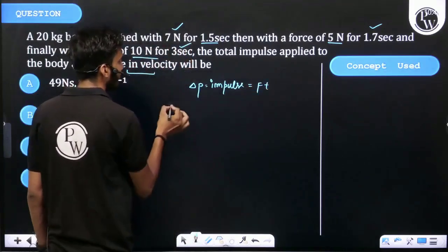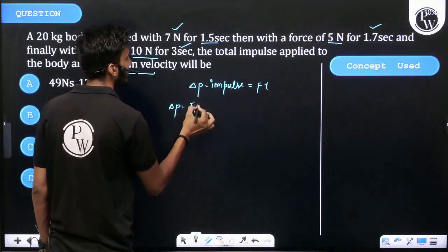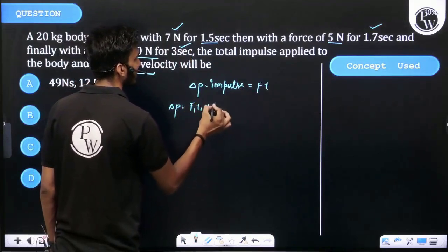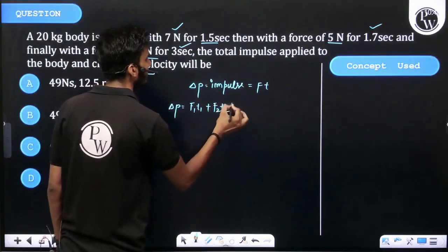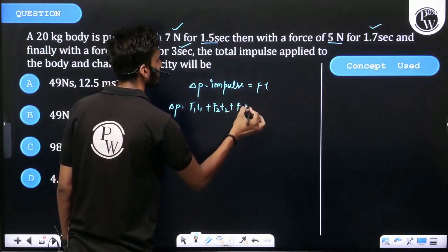Then we can say change in momentum is equal to F1T1 initially plus F2T2 and then F3T3.